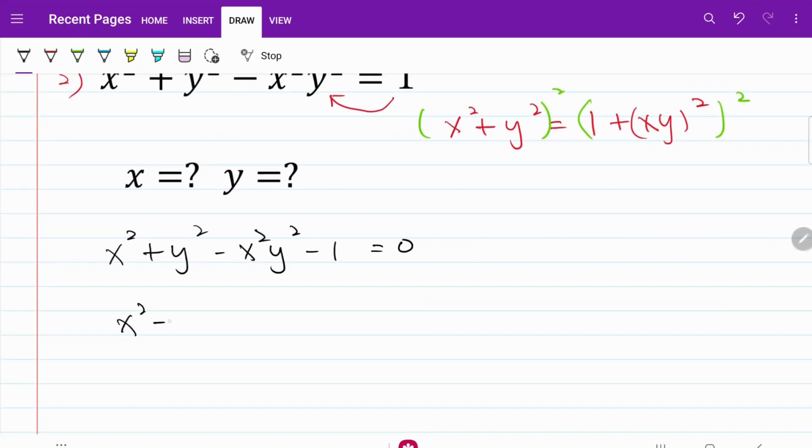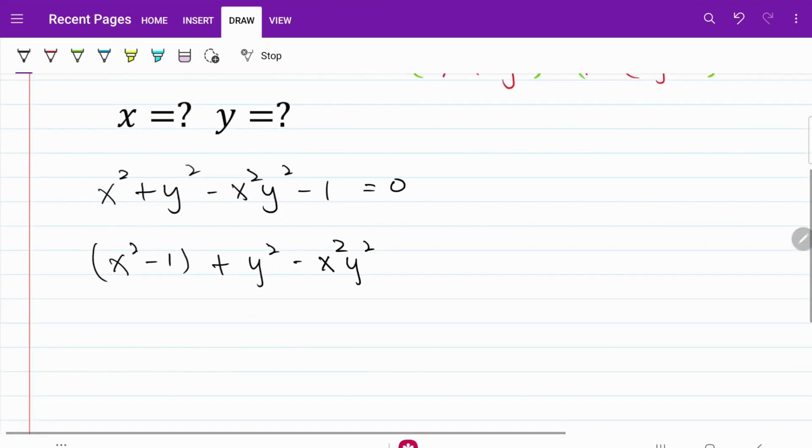So when I do that, I have x squared minus 1 plus y squared minus x squared y squared. If I go further and isolate y squared on the later part of the left-hand side, I have x squared minus 1 plus y squared times 1 minus x squared, and that's equal to 0.